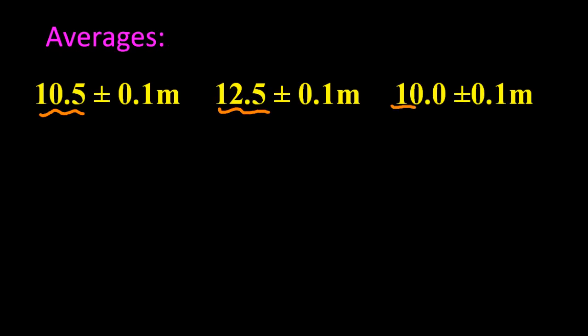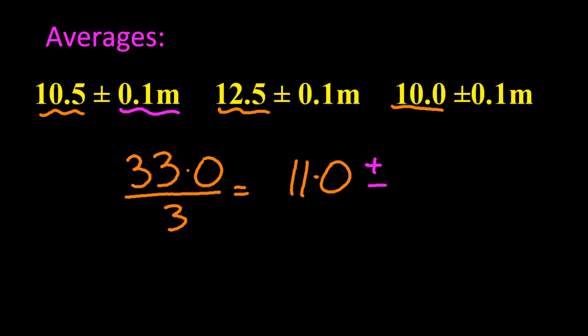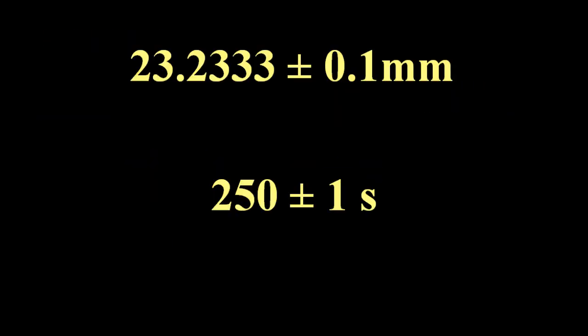A couple of common questions. For averages, just sum the data and divide by the number of data points to get your answer. But for the uncertainties, you also have to sum the uncertainties and also divide by the number of data points. So almost always, your uncertainty for your final answer is the same as the uncertainties as each data point.